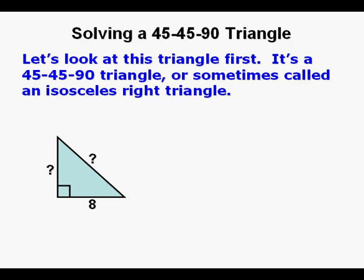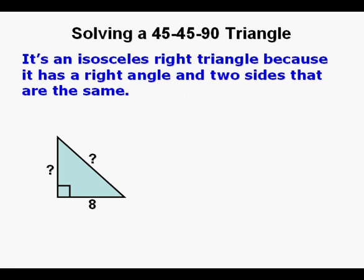Let's look at this triangle first. It's called a 45-45-90 triangle or an isosceles right triangle. It's an isosceles right triangle because it has a right angle and two sides that are the same.